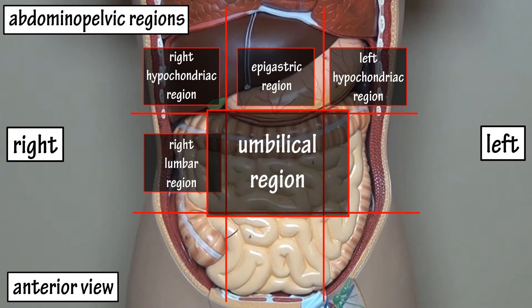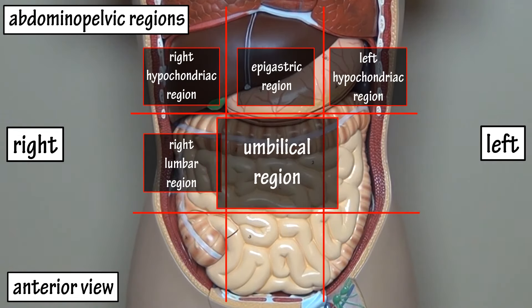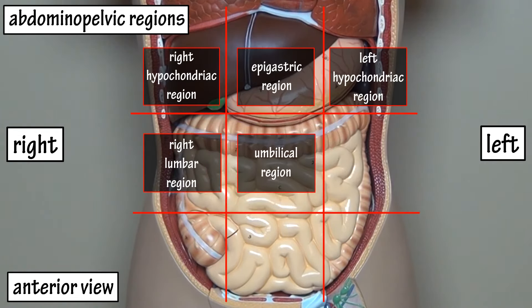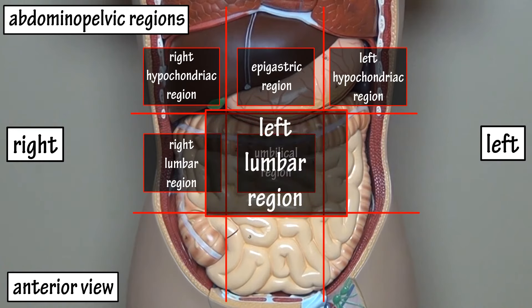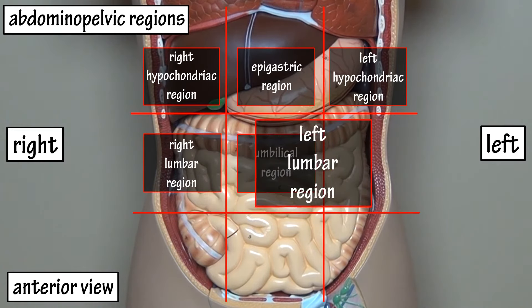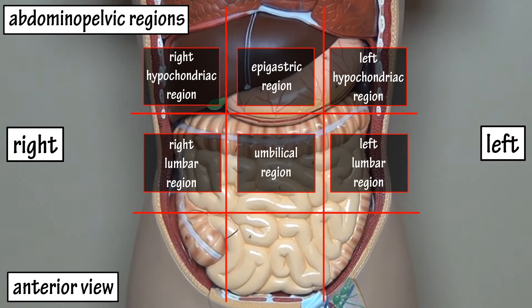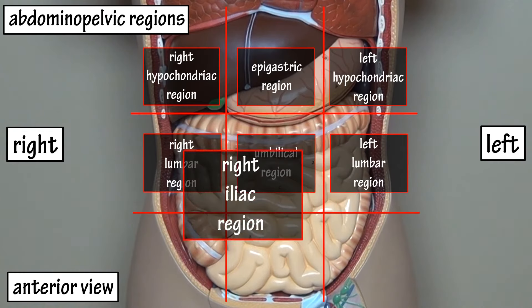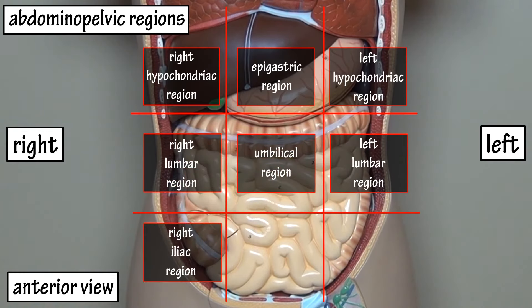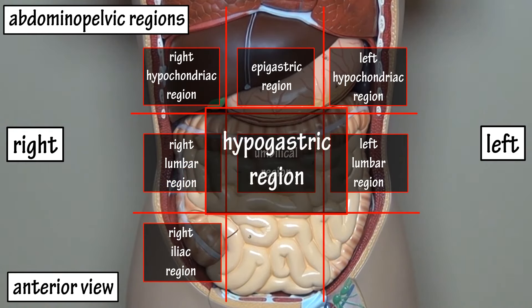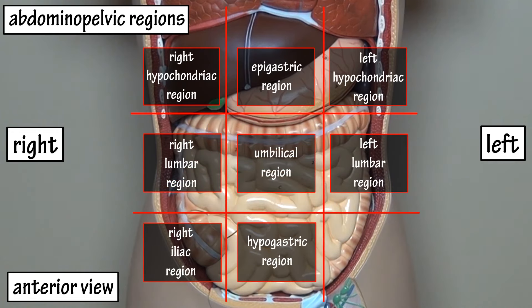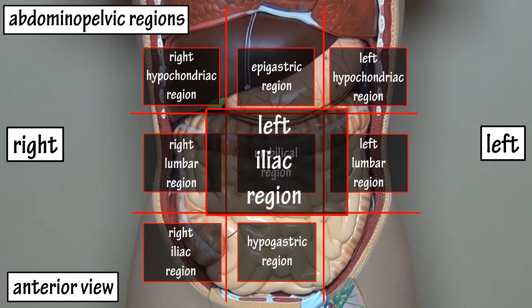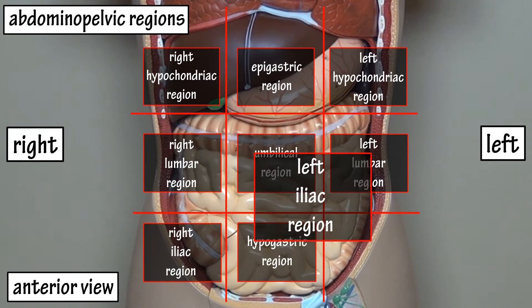The umbilical region is located in the center. The left lumbar region is in the middle right section. The right iliac region is in the lower left section. The hypogastric region is in the lower center area, and the left iliac region is in the lower right section.